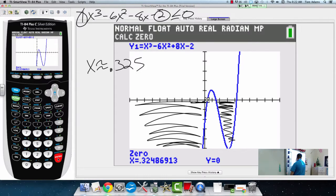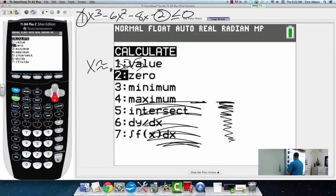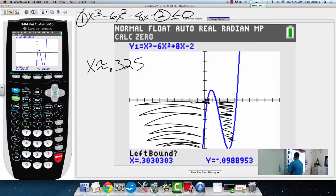Then my next zero, we're going to do the same thing. We're just going to hit second trace, choose zero, and we're going to go a little bit to the left of the intercept, hit enter, a little bit to the right of the intercept, and then somewhere in the middle as best I could get the cursor. And I get 1.46, so I've got x is approximately 1.461.